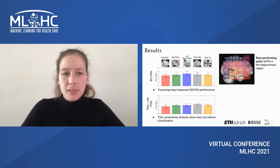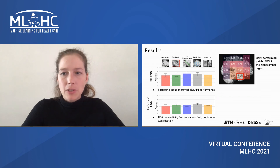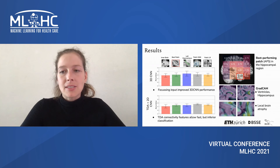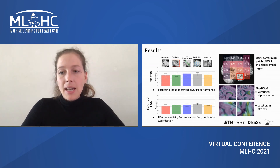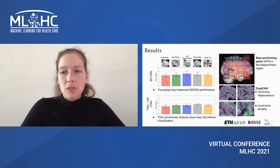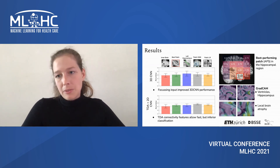In terms of interpretability analysis, we observed that the best performing patch comprised the hippocampus. In terms of Grad-CAM analysis, we found that the ventricles and the hippocampus were highlighted for a model trained on the full inner brain. These regions are highly relevant for Alzheimer's disease. At the local level, we saw that brain tissue atrophy, which is the space between the grooves of the brain, was actually highlighted.